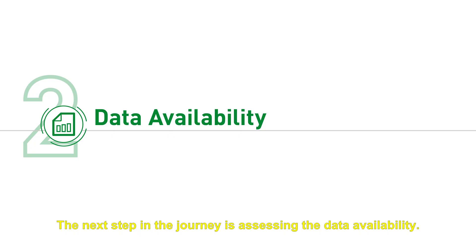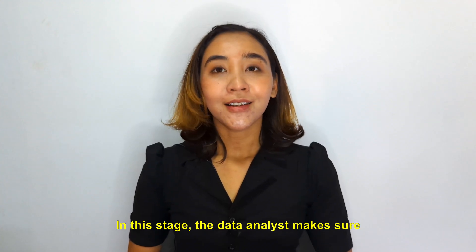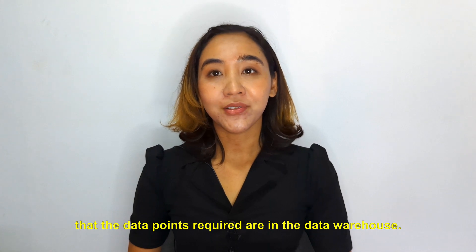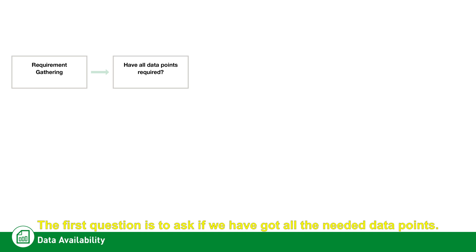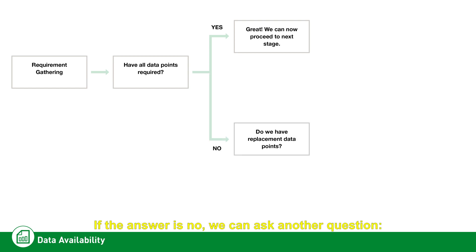The next step in the journey is assessing data availability. In this stage, the data analyst makes sure that the required data points are in the data warehouse. We will use a process flowchart to guide us through the questions we need answered. The first question is: do we have all the needed data points? If yes, we proceed straight to the query preparation stage.